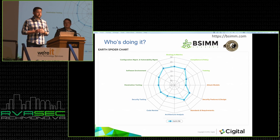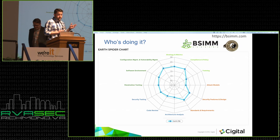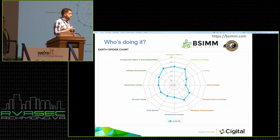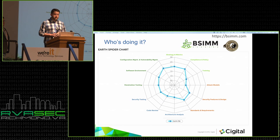The BSIMM is available for free on BSIMM.com. This spider chart shows the different domains — the model is broken into 12 practice areas and four domains: governance, intelligence, secure SDLC, and deployment of software. There are 78 firms in BSIMM 6, and we performed over 200 measurements of their firms, sometimes looking at individual business units or different development groups, to get a cut across the organization.